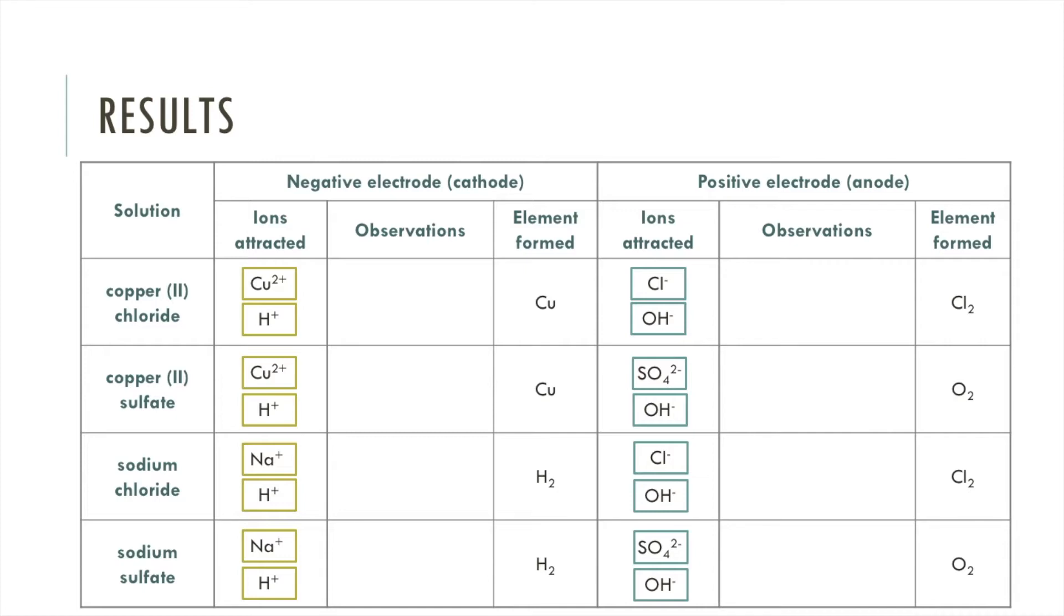So this table is showing the different aqueous solutions down the side and we have two main columns, one concerning the negative electrode and one concerning the positive electrode. For each electrode I've got a column for the ions that are attracted to the electrode, observations that we'll note down as we go, and the element formed which are already predicted and we can check those during this video.